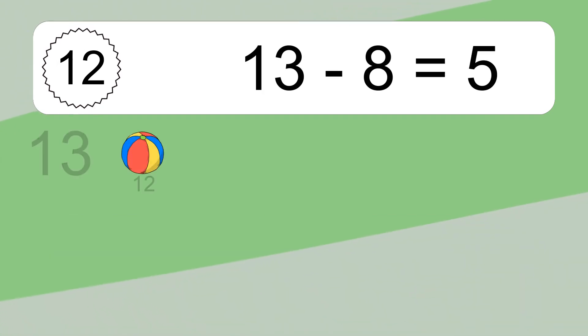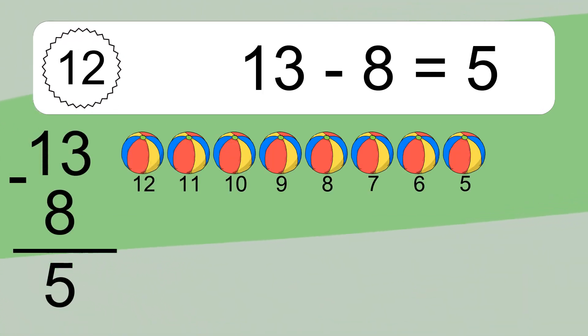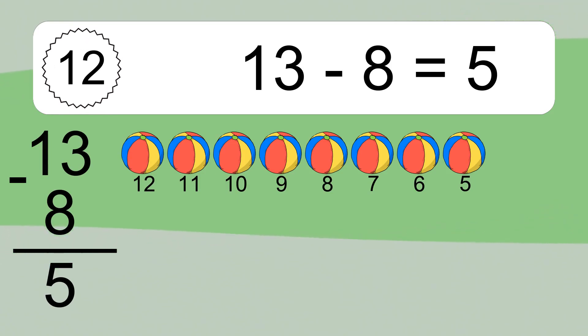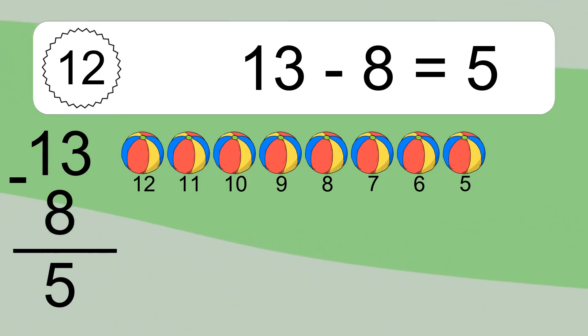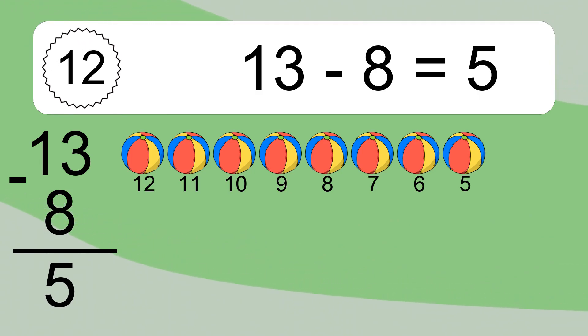13 minus 8 equals what? 13 minus 8 equals 5. Let's count it: 12, 11, 10, 9, 8, 7, 6, 5.